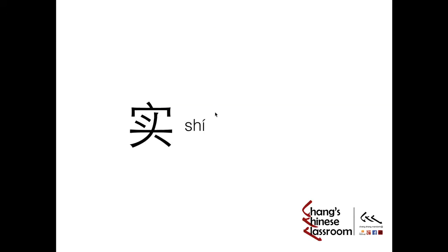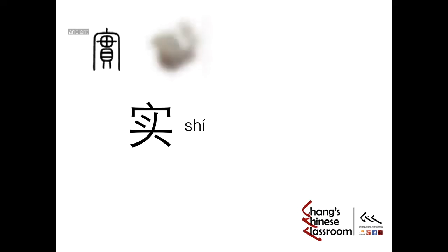Next character: Shi. Take a look at this ancient picture. This part, the cover, actually indicates the roof or just the house. And the lower part — all of this — indicates money. So the meaning of Shi in ancient times probably means a house full of money, meaning rich. And then later on, this meaning of rich became more concrete. It involved the meaning 'real' — probably if you have money, you have a real life.